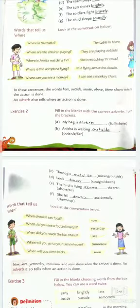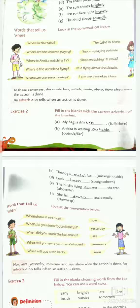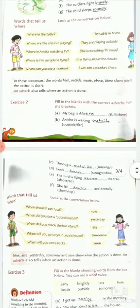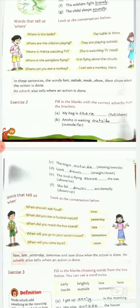Some words tell us when. Look at the conversation: When should I eat food? Now. When did you see a football match? Yesterday. When did you reach the bus stand? Late. When will you go to your uncle's house? Tomorrow. When will you come back? Soon. So now, late, yesterday, tomorrow, and soon show when the action is done. An adverb also tells when an action is done.